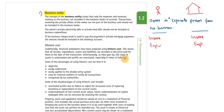The owner's private electricity bill or private food bill should not be included as business expenditure. The business records its expenditure separately and the owner records their expenditure separately. That is the business entity concept.